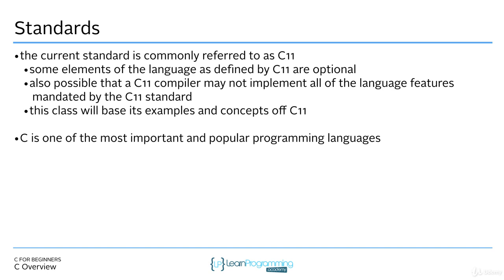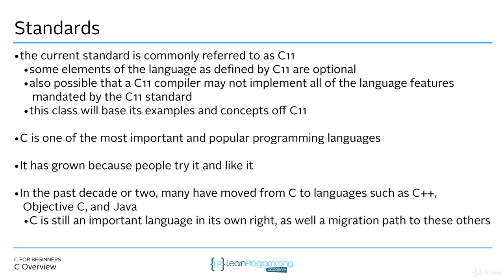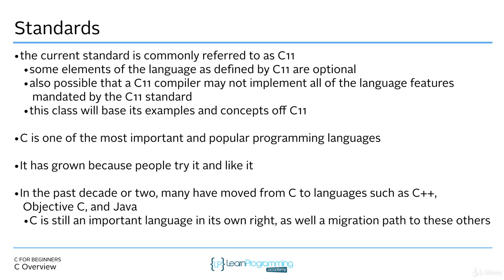For all the reasons mentioned so far, this is why C is so important and why it's popular. People like it because it's easy to write and easy to read, and Dennis Ritchie's goal was to make it a developer language. In the past decade or two, you may have moved from C to languages such as C++, Objective-C, and Java, but C is still important. By learning C, you can easily migrate to these other languages as well. That's a basic introduction — a little about the standards, a little about the history — and now we'll dive into more details of the programming language.